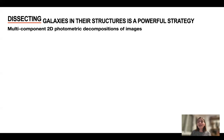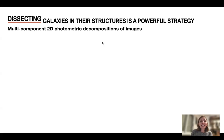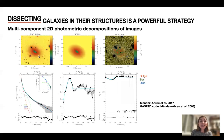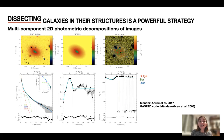How do we do this? Well, nowadays we use multi-component two-dimensional photometric decompositions. So we take a galaxy image, like this one here, and we model the light included in this image with a superposition of stellar structures.